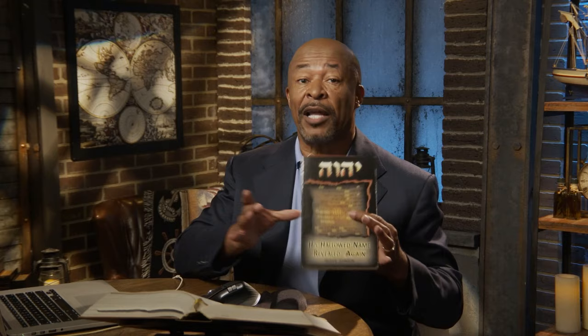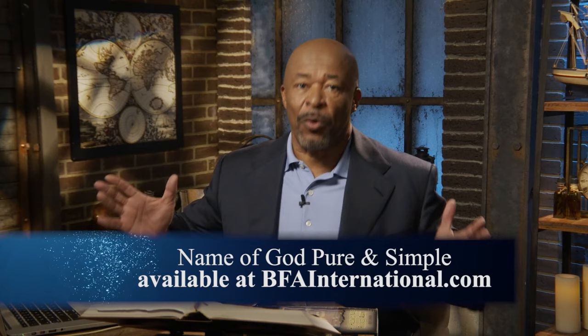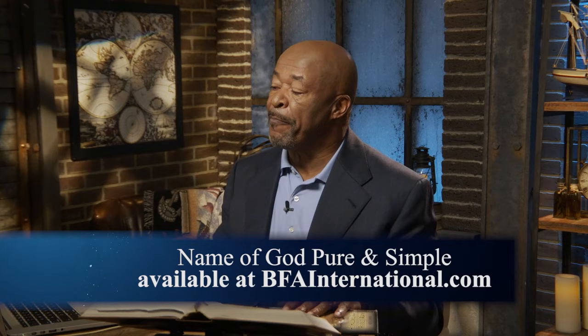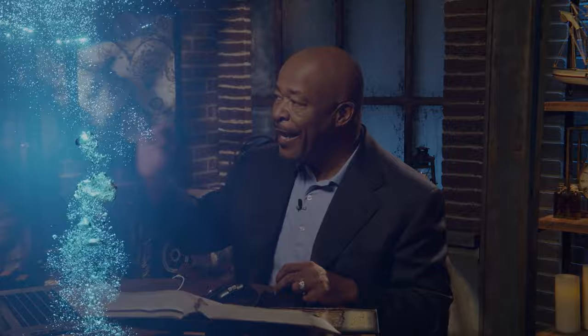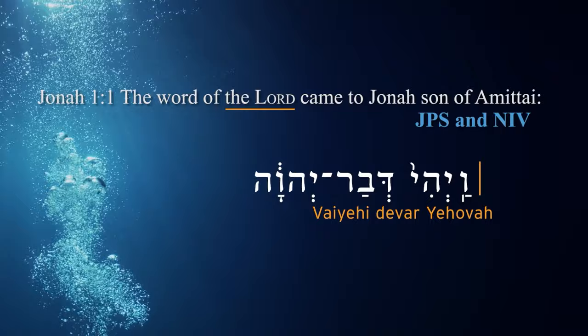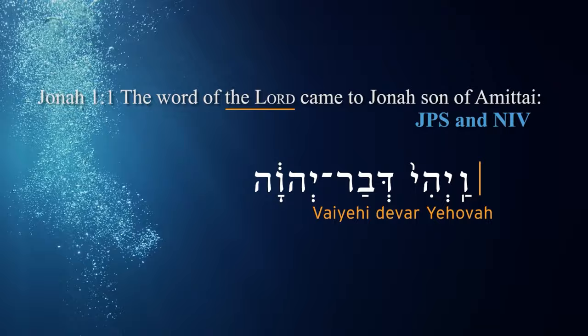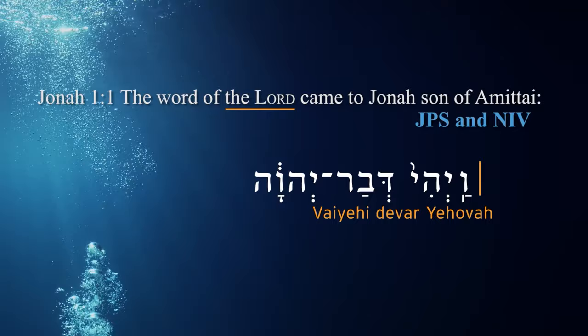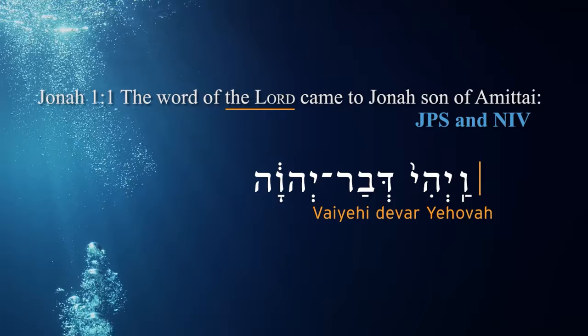I'm not going to go into great depth about the next word — Yud-Heh-Vav-Heh — because I've written an entire book on it, 'His Hallowed Name Revealed.' What's really exciting is that vayihi is a verb, devar is a noun, and Yud-Heh-Vav-Heh is the personal name of God — which I'm translating as Yehovah. The word vayihi and Yehovah come from the same root. Sandwiched between them is the word for matter or thing, with the meaning of God's name being: He was, He is, and He shall be.